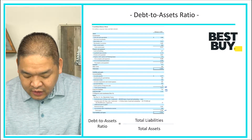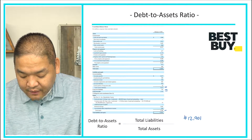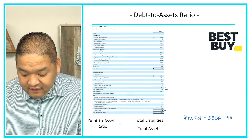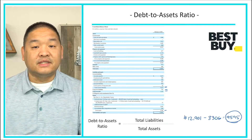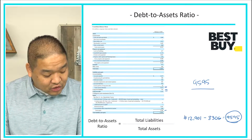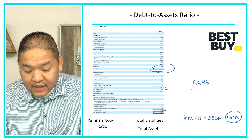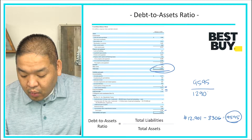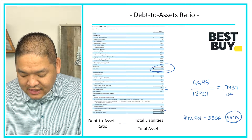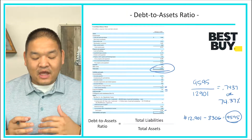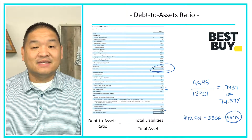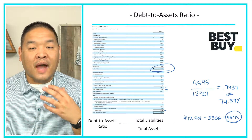Total liabilities and equity is 12,901 (millions), and total equity is 3,306, giving us total liabilities of 9,595. Dividing total liabilities of 9,595 by total assets of 12,901 gives us 0.7437, or 74.37%. This means Best Buy is financing 74.37% of its assets with liabilities.